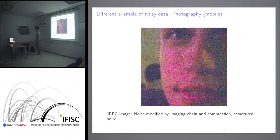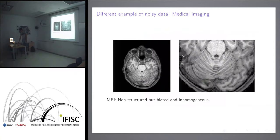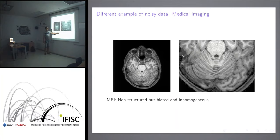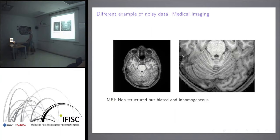Another classical example is medical imaging MRI, which has a lot of noise. The noise model is different from photography — instead of a Poisson variable, you have a Rice variable. These are probability distributions where the expected value is not the value we actually want. It's also inhomogeneous: depending on where you are in the image, the amplitude of the noise changes — not only with the signal but also with position. So it's more complicated to remove.